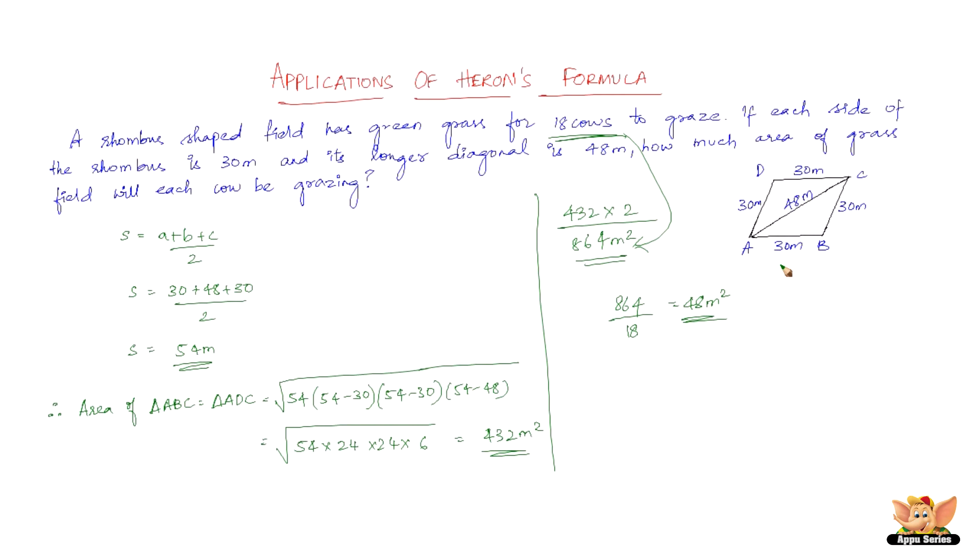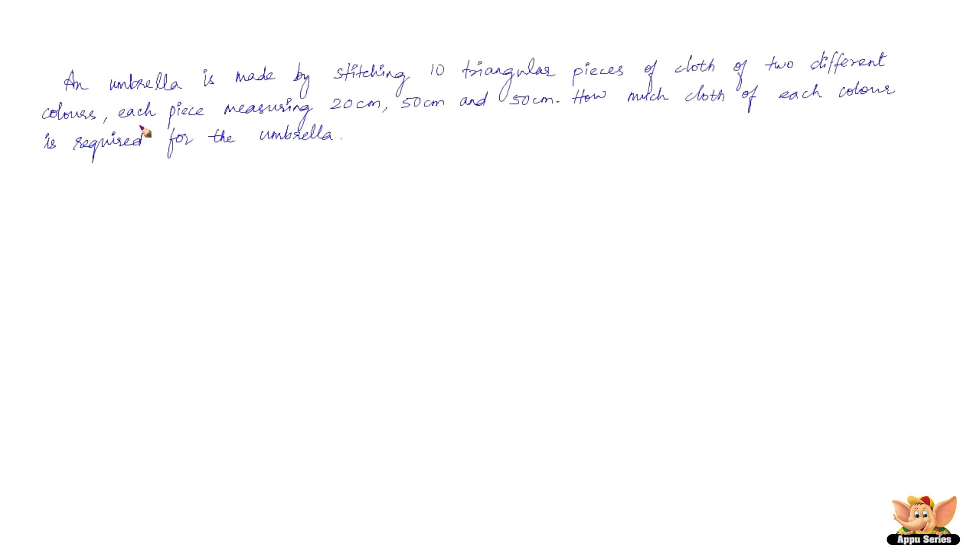So the question here is like this: An umbrella is made by stitching 10 triangular pieces of cloth of 2 different colors. Each piece measuring 20 cm, 50 cm and 50 cm. How much cloth of each color is required for the umbrella? It seems like a quite easy problem this. Okay, first let's get the figure right. So here are the alternating colors umbrella.